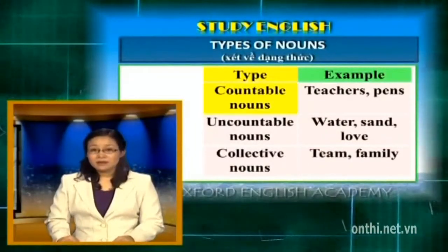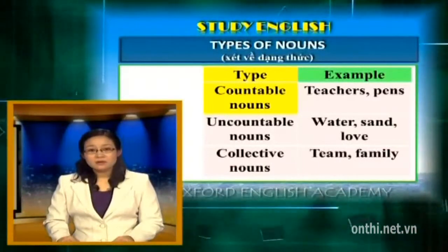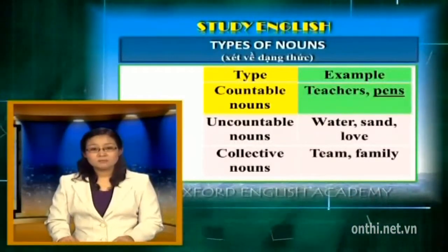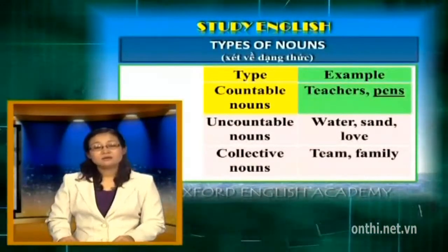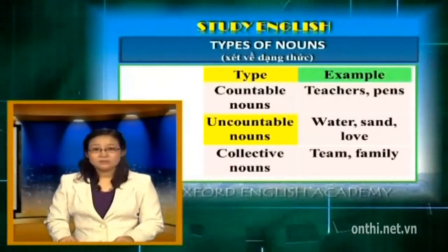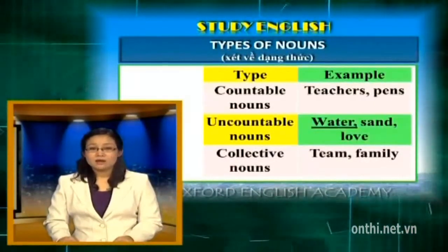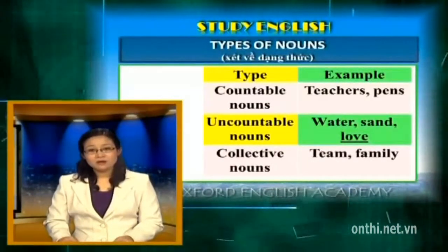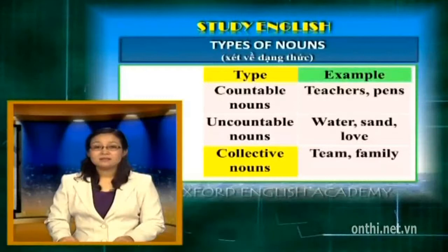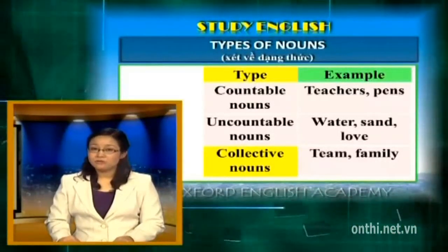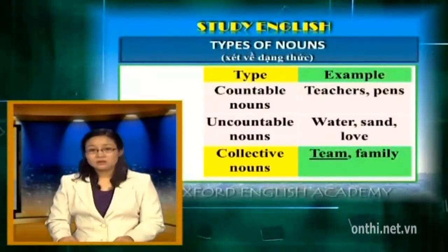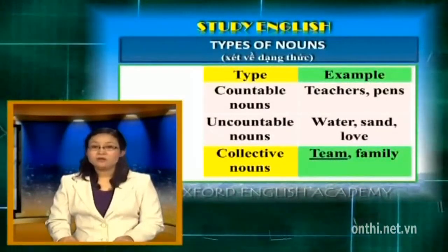Xét về dạng thức, danh từ tiếng Anh chia làm 3 loại. Danh từ đếm được (countable nouns) là loại danh từ có thể tách thành từng đơn vị, ví dụ teachers, pens - và chúng ta có thể đếm được: a teacher, two pens. Ngược lại, danh từ không đếm được thì không tách thành từng đơn vị được, ví dụ water, sand, love - phải đếm qua đơn vị đong đếm. Danh từ tập hợp là danh từ chỉ một nhóm vật hoặc người với tư cách là một đơn vị tổ chức, ví dụ family, team. Khi danh từ tập hợp làm chủ ngữ, động từ đi với chúng có thể chia ở số ít hoặc số nhiều, nhưng thường được chia ở số nhiều.